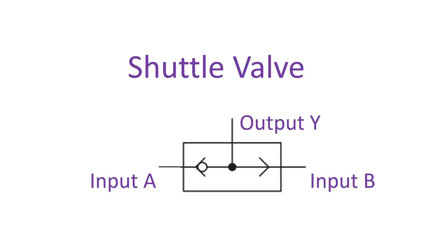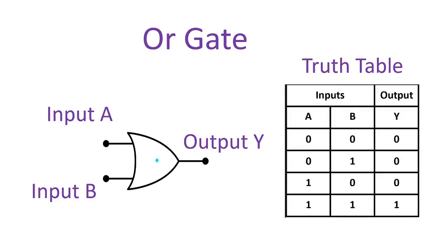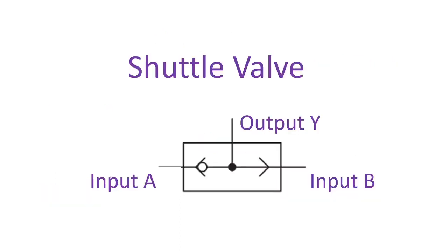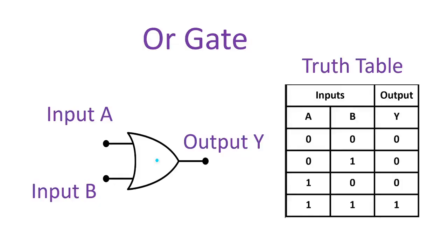For shuttle valves, they work on the same principle as a parallel circuit and OR gate logic. The output of the shuttle valve is true if either of the two inputs are true. In the parallel circuit, the bulb will glow if either of the two push buttons are pressed, or if both are pressed together. For the OR gate, it behaves according to a truth table: the output is true if either of the two inputs are true, otherwise it is false.